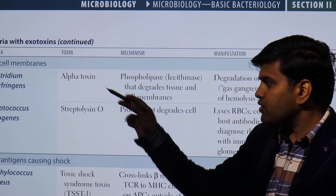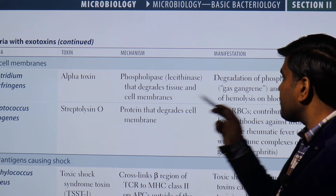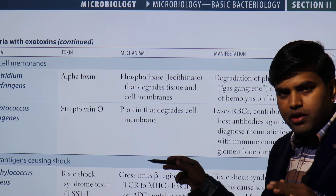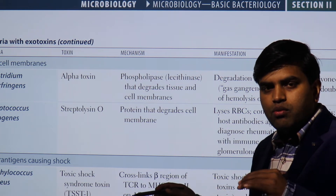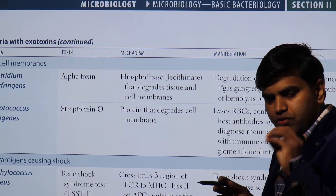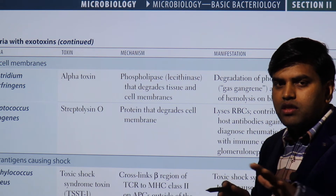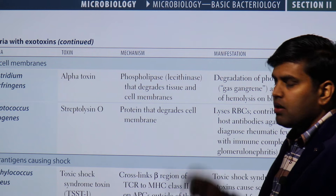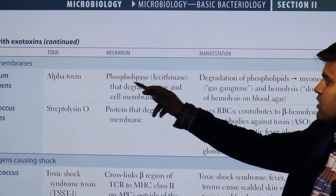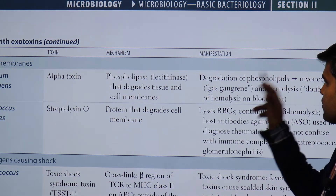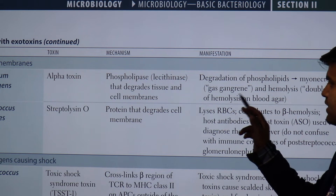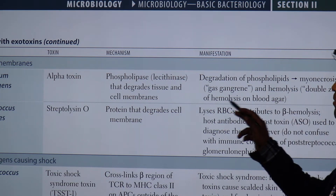Clostridium perfringens typically causes wound infections, where there is formation of gas gangrene. The toxin — which is an enzyme — degrades tissue and cell membrane, allowing the infection to spread from one cell to another across a large area. This phospholipase degrades phospholipids, causing myonecrosis — necrosis of muscle — resulting in gas gangrene and hemolysis.